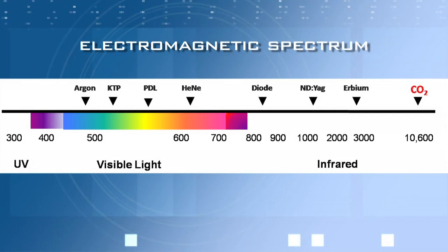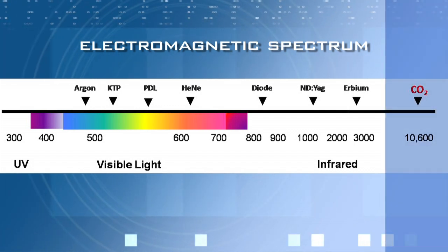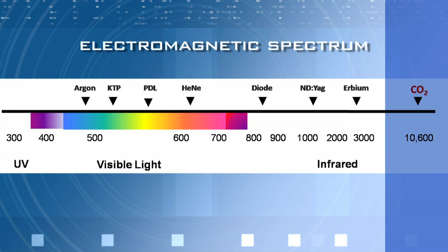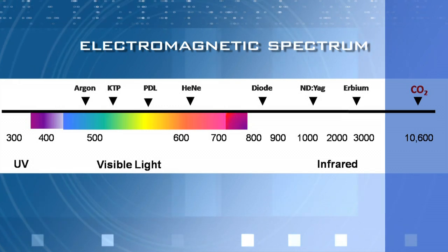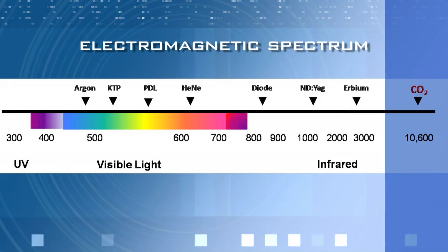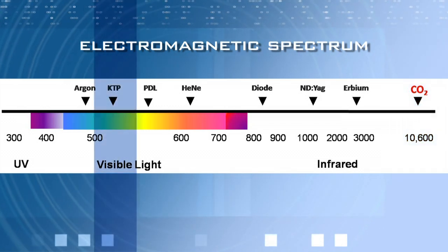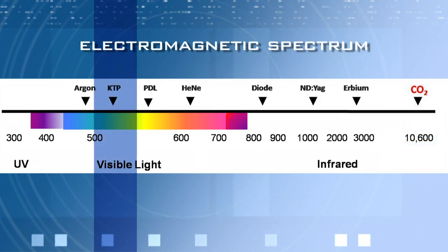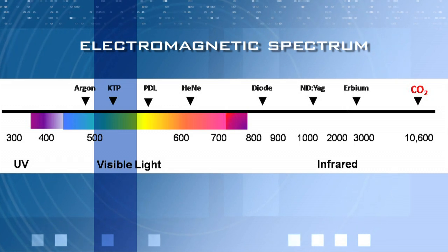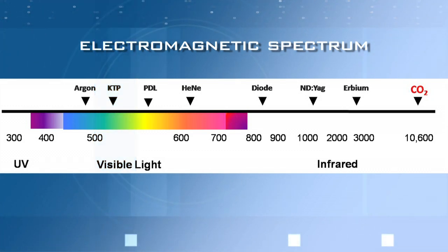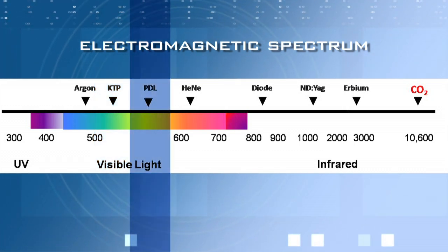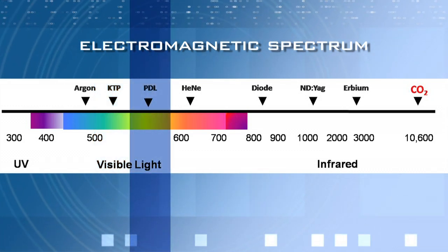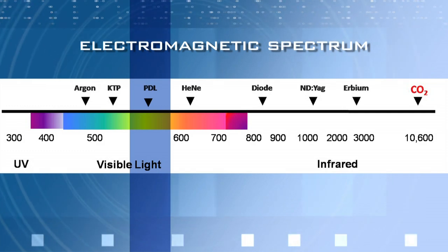The CO2 laser has a gas gain medium with a wavelength of 10,600 nanometers. The KTP laser has a solid gain medium with a wavelength of 532 nanometers. The pulse dye laser has a liquid dye gain medium, tunable from 500 to 600 nanometers.